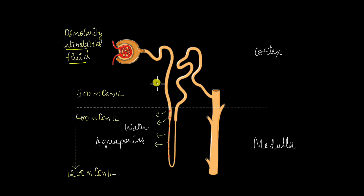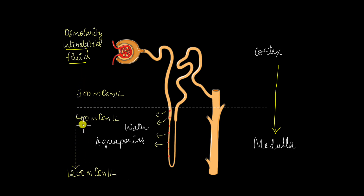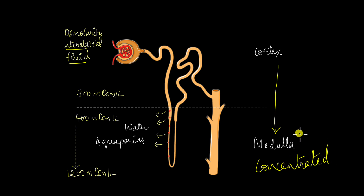Before we get to that reason, let's take a look at the osmolarity of the interstitial fluid. The interstitial fluid is the space surrounding the nephron. The osmolarity of the interstitial space increases as we go down from the cortex into the medulla. It starts out at around 300 mOsm per litre at the cortex, but as we go deeper into the medulla the osmolarity increases.